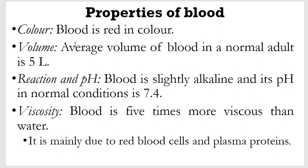The next property that you would appreciate is how much blood is found within a system — we look at five liters as the average. The pH is about 7.4, slightly alkaline. And when we talk of viscosity, it is more viscous than water, mainly due to the red blood cells and the plasma proteins. Because of these aspects, it has a specific gravity of 1.05 to about 1.061.